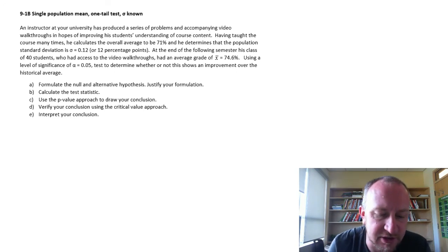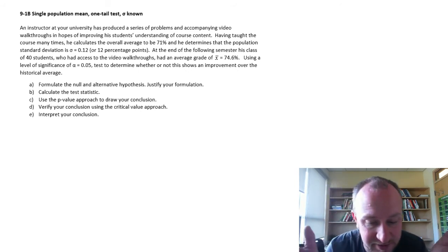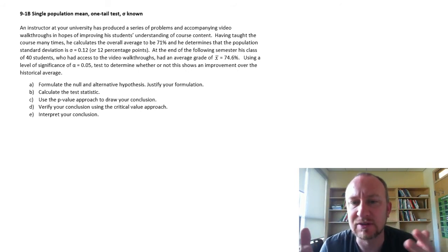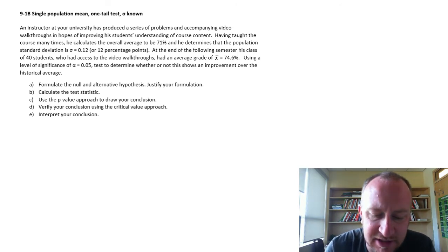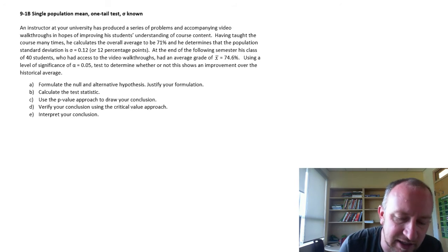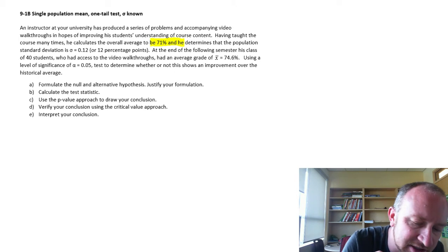Here we have an instructor at your university who has produced a series of problems and accompanying videos in hopes of improving student's understanding of the course. Having taught the course many times, he's calculated the overall average to be 71 percent and the population standard deviation is 12 percentage points.